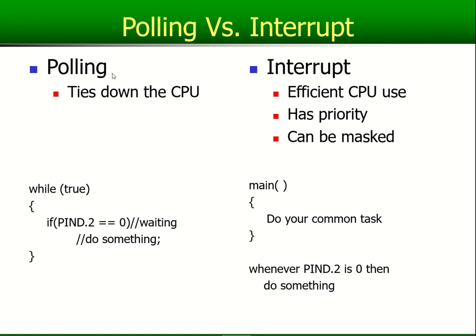The first two concepts we must talk about is polling. The problem with polling is, like in this specific program here, it's waiting. If pin D2 is a zero, you'll be sitting inside this loop and nothing will happen. You can't do anything else. This is the problem with polling — it ties the CPU down.